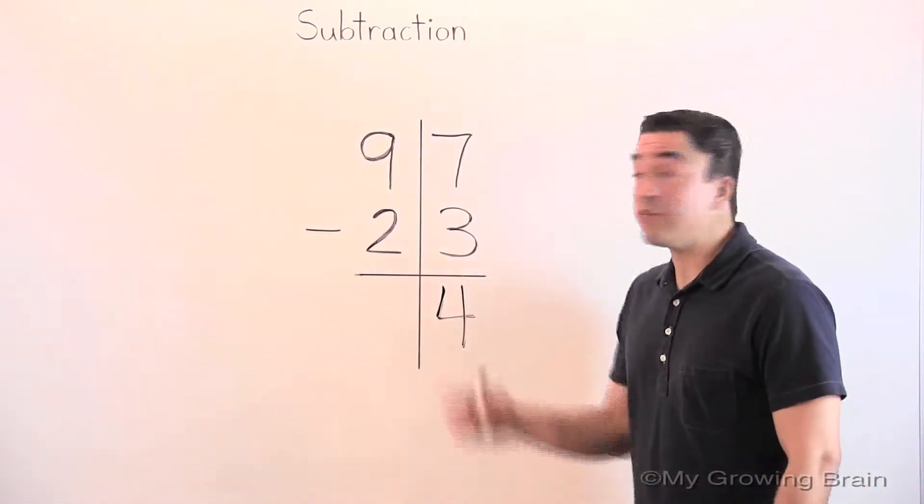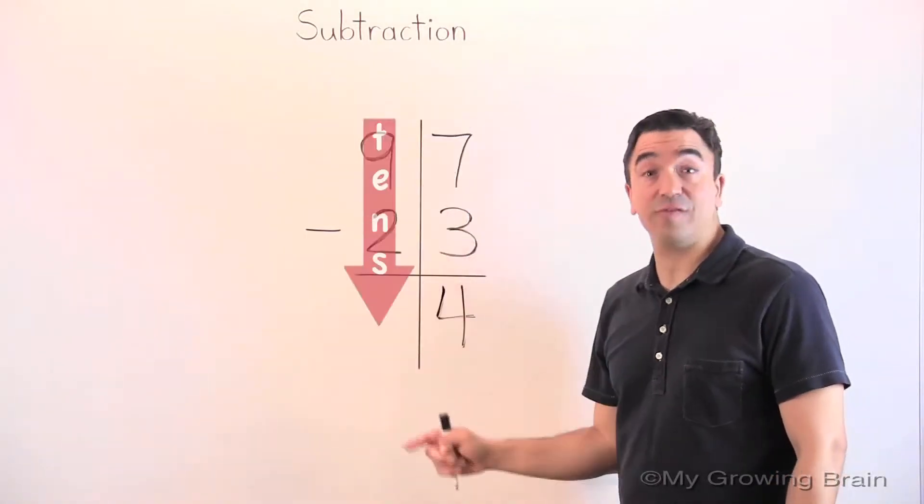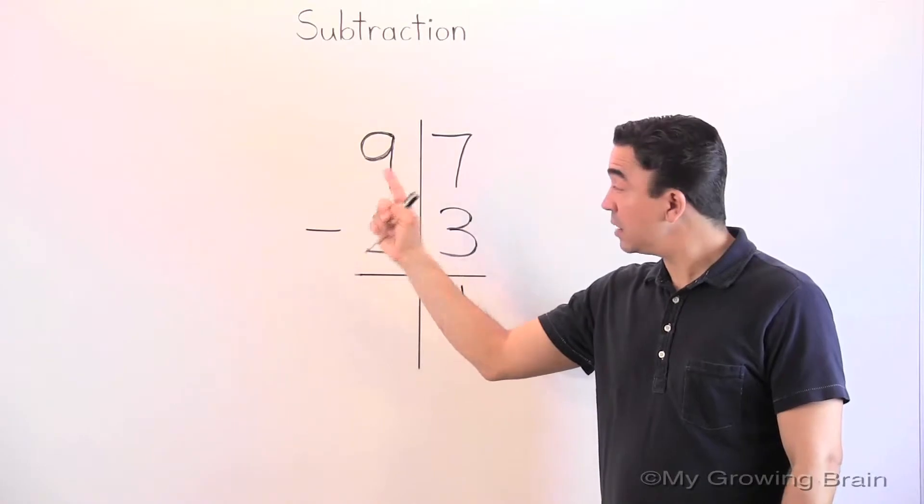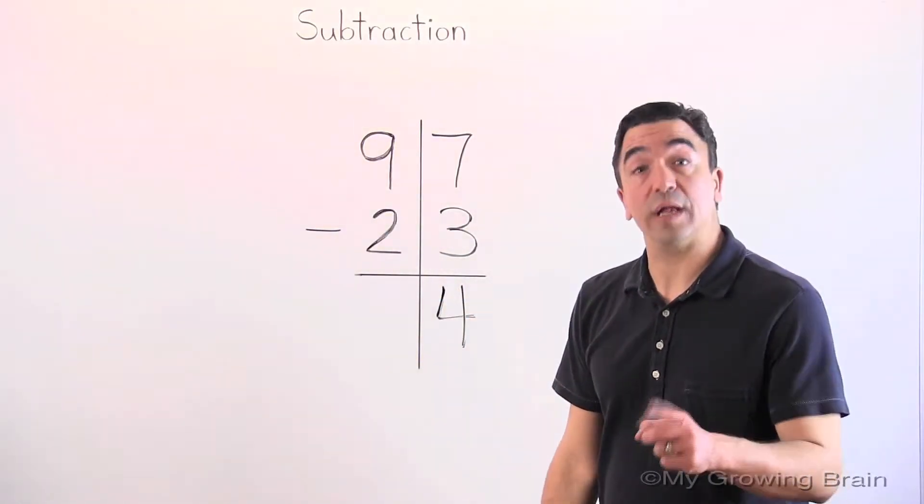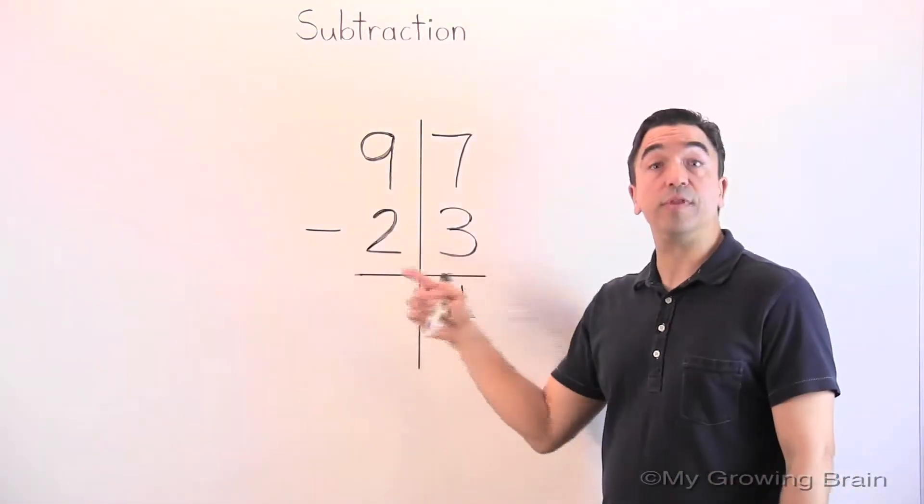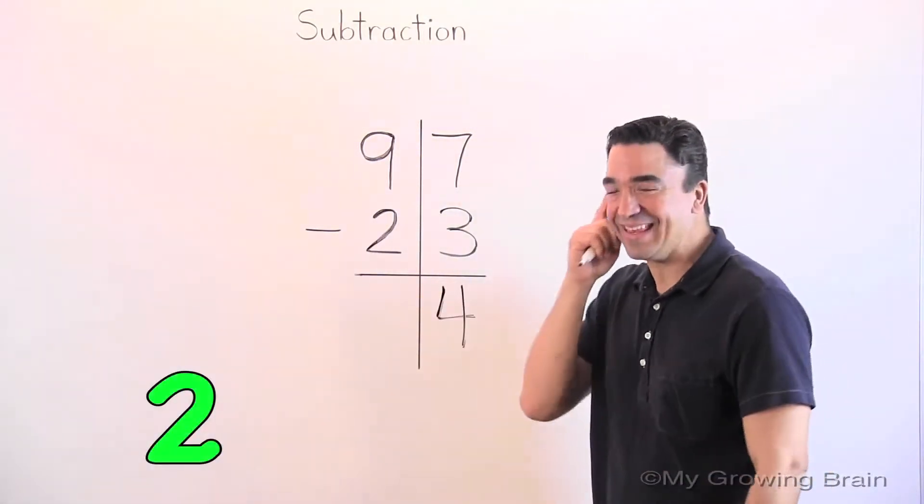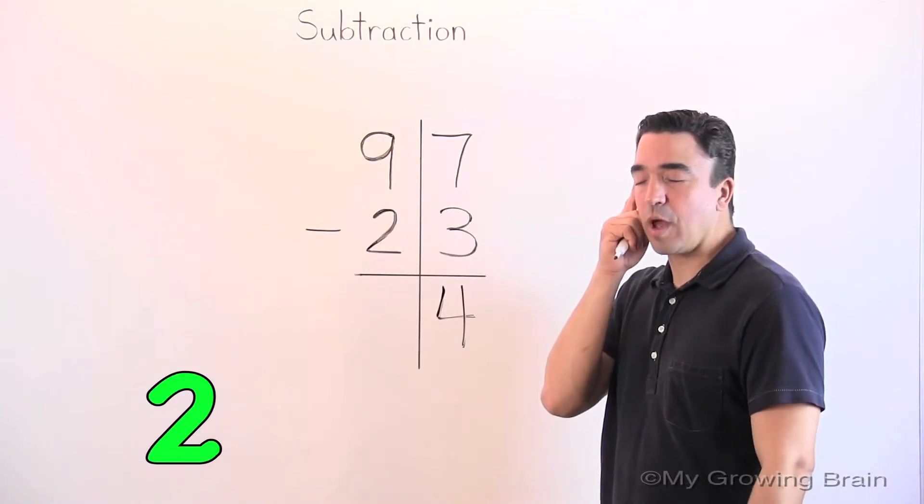Now, let's move to the tens place. 9 minus 2. Once again, we're going to count on. I'll put the 2 in my head. No, there's my 2 again. All right. Here we go.